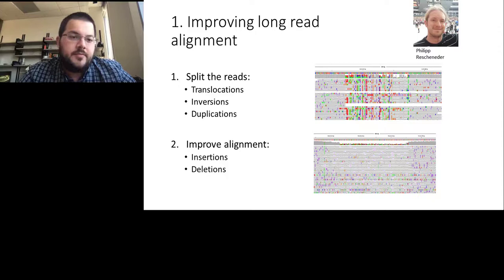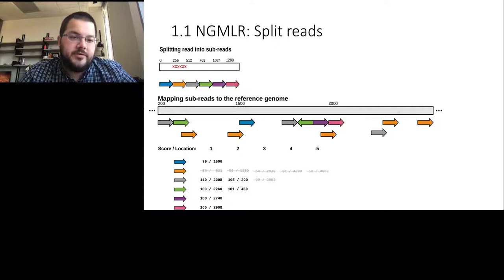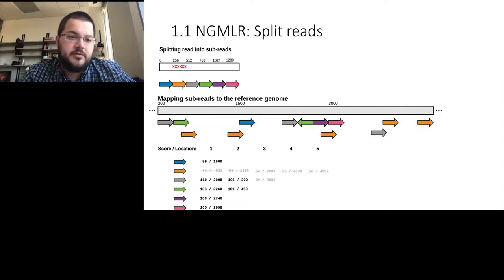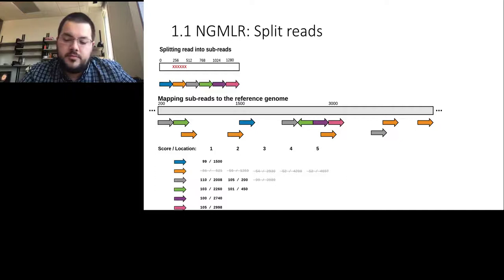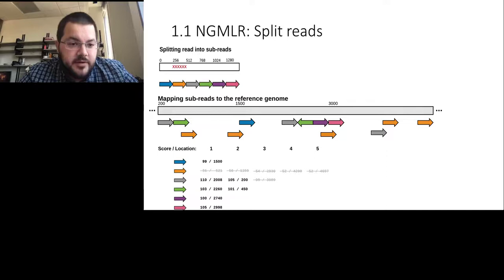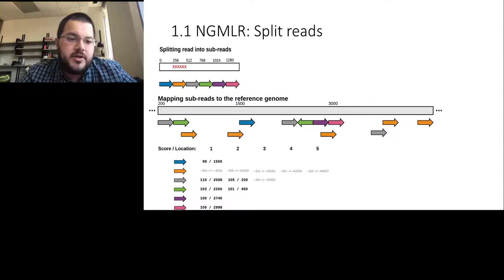I want to briefly explain how we do split-read mapping. We have a long read and split it up into 256 base pair segments. For the sake of an example, assume the orange part is a difficult-to-map region — perhaps repetitive or very noisy. We use the short-fit mapper NGM developed during my PhD to map all subsequences to the reference genome and build a catalog of where these 256 bp subsegments map. The blue arrow maps at location 1,500 with an alignment score of 99; the orange part maps to multiple locations poorly and is therefore ignored; the gray part maps well in two places, with a third shady hit also ignored.